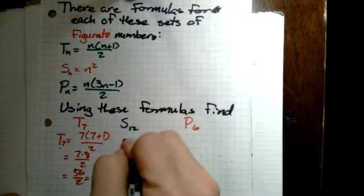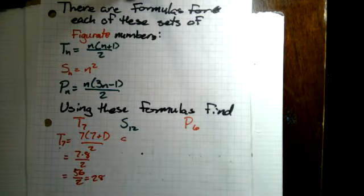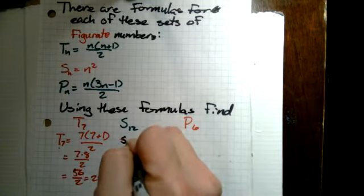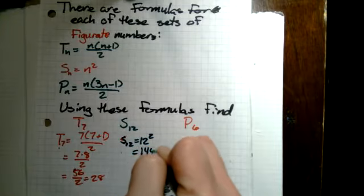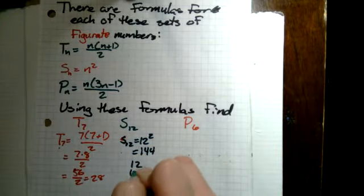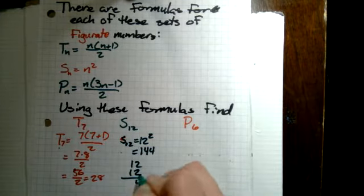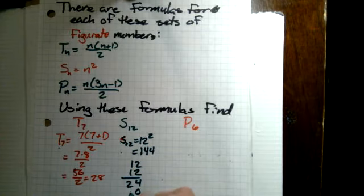S sub 12. That's pretty easy. I'm going to switch over to green. I like switching up my colors. S sub 12 equals 12 squared. And if we plug that into a calculator, that's 144. We can do 12 times 12. 2 times 2 is 4, 1 times 2 is 2, 2 times 1 is 2, 1 times 1 is 1. Add it up, 144.